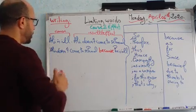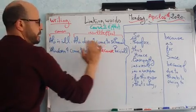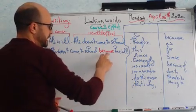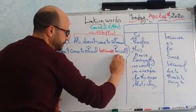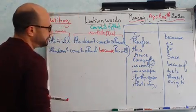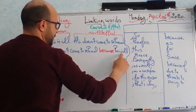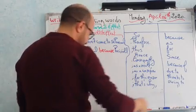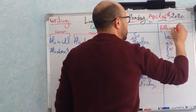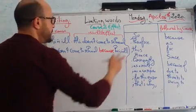So this is the cause, and this is the result — this is cause and effect. The linking word 'because' is normally used in the middle of the sentence, and it is always followed by a cause. Most of the time it's in the middle of the sentence. What is important is that it is always followed by a cause. All these words here are linking words that are followed by a cause.